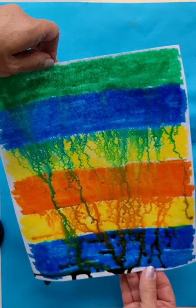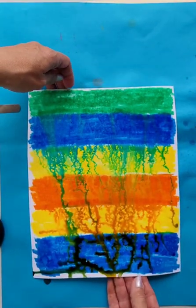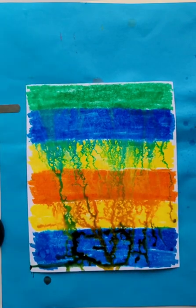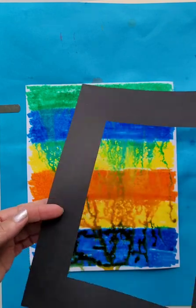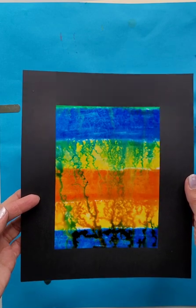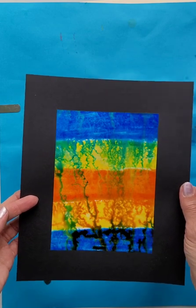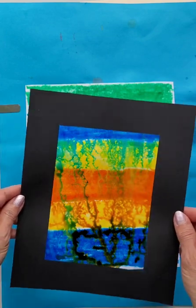After it's dry, then you can take a black or white piece of paper that you cut a hole into. This is an 8 by 10 piece of paper, and then I cut a hole in it that is 5 by 7. You'll want to wait until it's completely dry, though, of course.